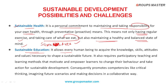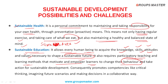Sustainable Education allows every human being to acquire the knowledge, skills, attitudes, and values necessary to shape a sustainable future. It requires participatory teaching and learning methods that motivate and empower learners to change their behavior and take action for sustainable development. It promotes competences like critical thinking and imagining future scenarios.